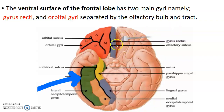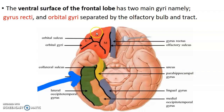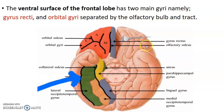This is the ventral surface of the frontal lobe. We need to appreciate the gyrus rectus — rectus means straight. Then we have an olfactory sulcus for the olfactory tract. The rest is the orbital gyrus with orbital sulci, divided into anterior, posterior, medial, and lateral orbital gyri. The olfactory bulb and tract within the olfactory sulcus separate the gyrus rectus from the orbital gyrus. The orbital gyrus is divided by an H-shaped orbital sulcus into anterior, posterior, lateral, and medial orbital gyri.